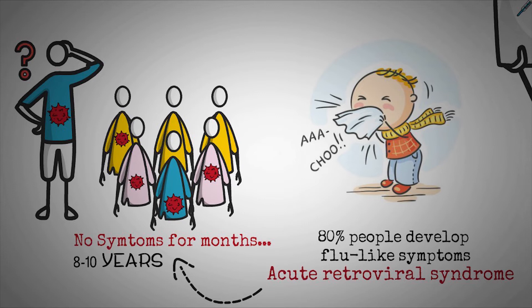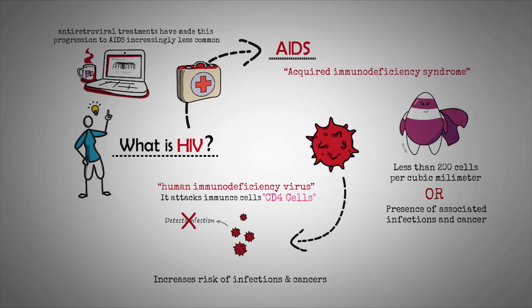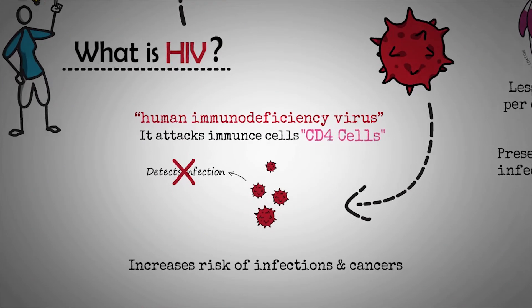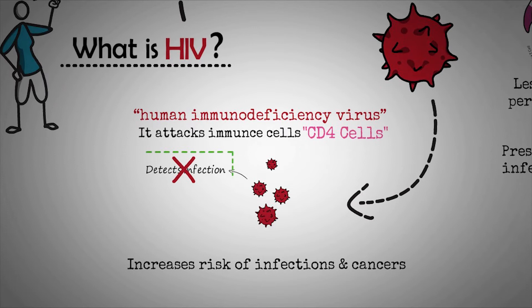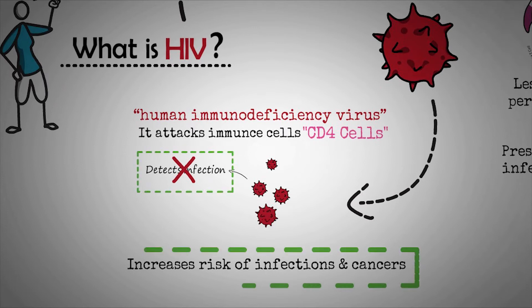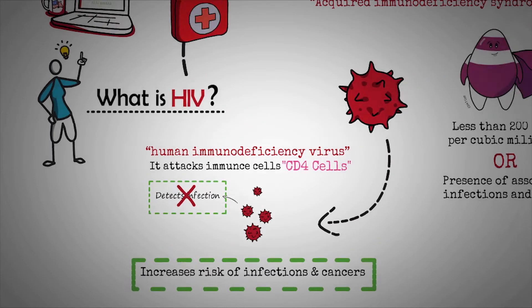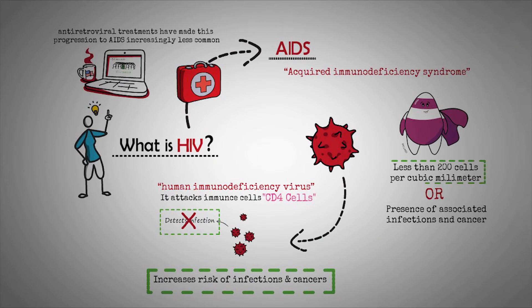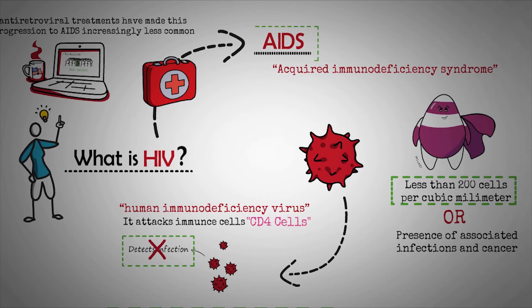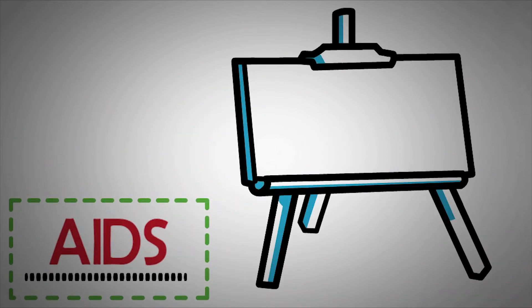If a person with HIV does not receive effective treatment, the virus weakens the body's ability to fight infection, exposing it to serious illnesses. When CD4 cells are severely depleted at fewer than 200 cells per cubic millimeter, a doctor can diagnose AIDS, which is sometimes called stage 3 HIV.